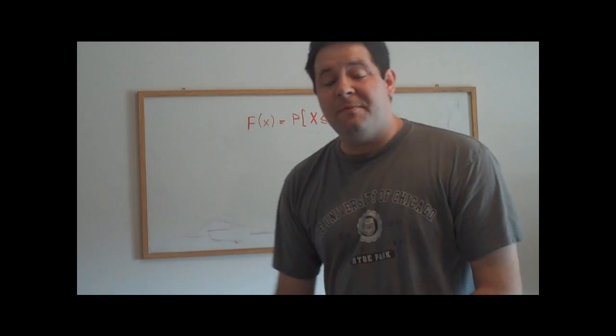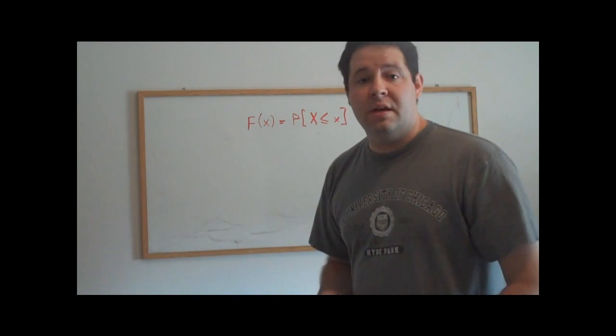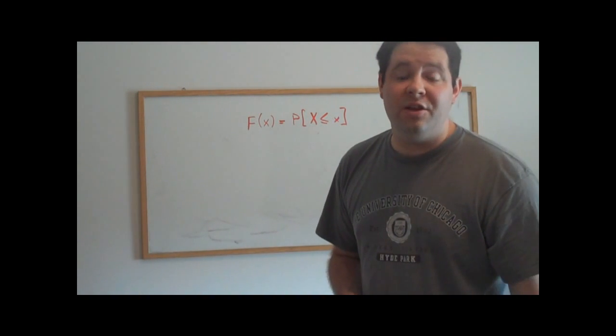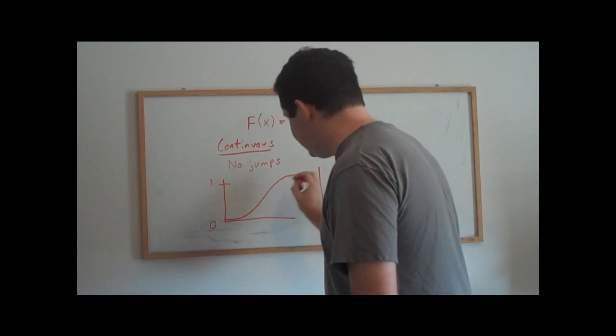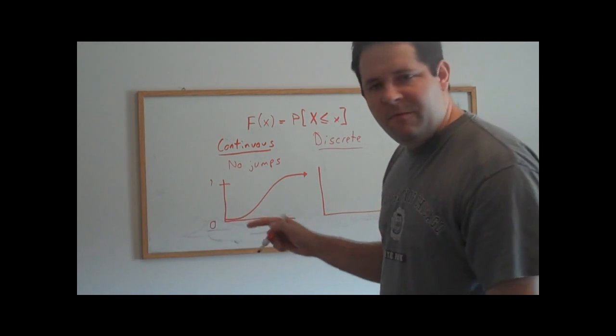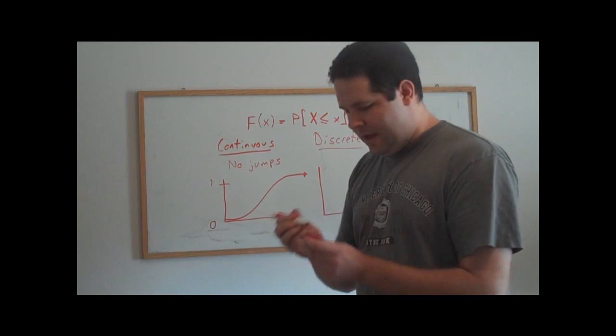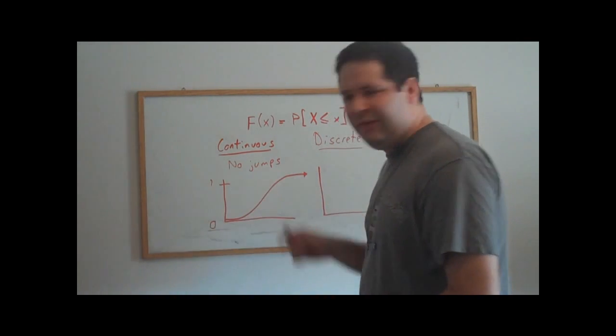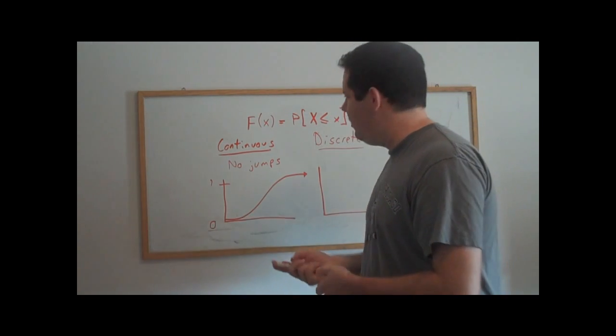So if a distribution function has no jumps, that's going to be what's called a continuous random variable. And it asymptotes up to 1, asymptotes to negative infinity here at 0, and it's just a smooth continuous function here. That's a continuous random variable.